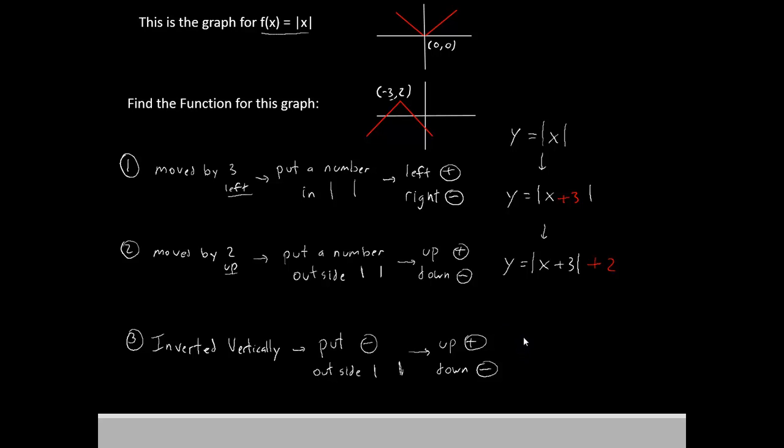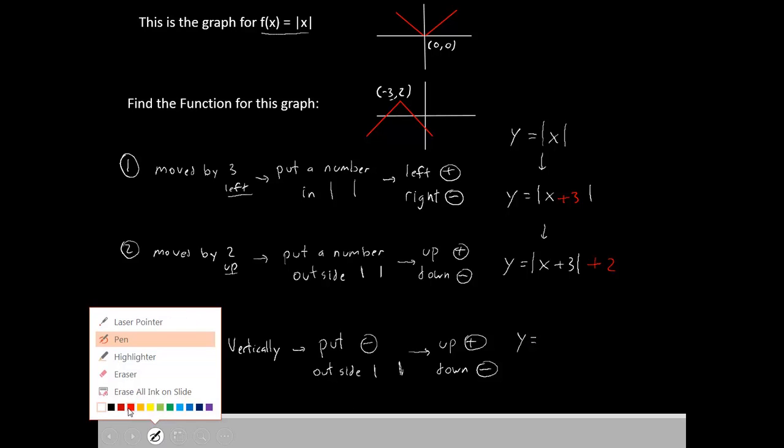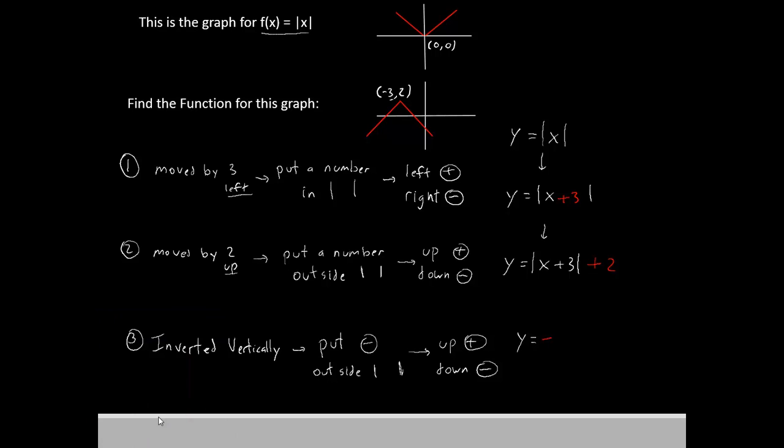So that changes our function one more time. We will now have y equals, we'll put a negative sign outside the pipes, and then just rewrite our function. Absolute value x plus 3, close, plus 2. And that's our final function.